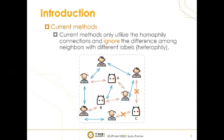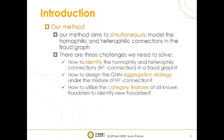As shown in the picture below, current methods will filter all neighbors of fraudster C, which makes the neighbor information of C missing, resulting in C being hard to detect. To address this issue, our paper aims to simultaneously model the homophilic and heterophilic connections in the fraud graph, assimilating the nodes with homophilic connections and discriminating the nodes with heterophilic connections.